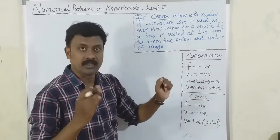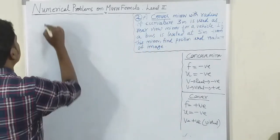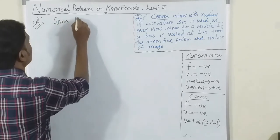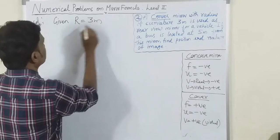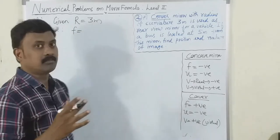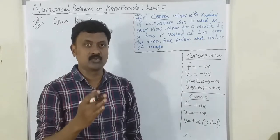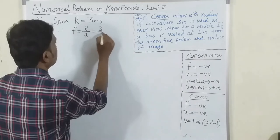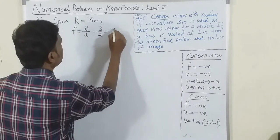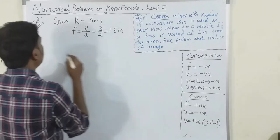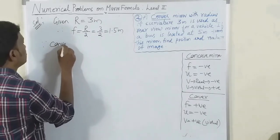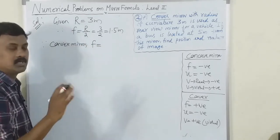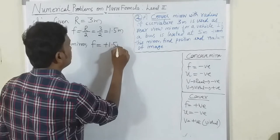Given r = 3 meters, therefore f = r/2 = 3/2 = 1.5 meters. Since it is a convex mirror, f = +1.5 meters.